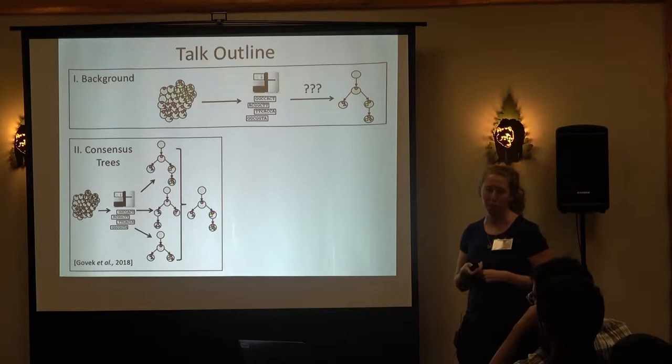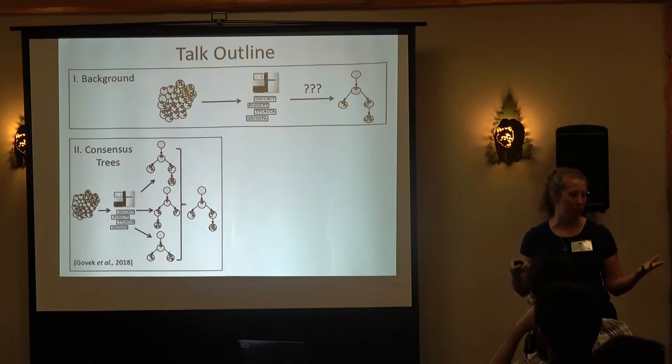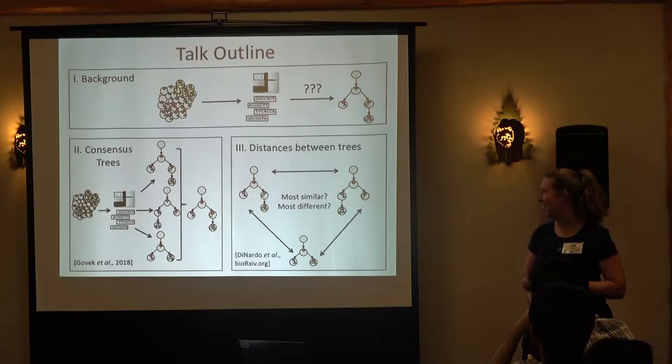One is a method that allows us to find consensus amongst trees — given a set of trees, can we combine them to get a better inference? Very much related to that is defining distance measures between these trees: how do we actually compare whether two trees are more or less similar?